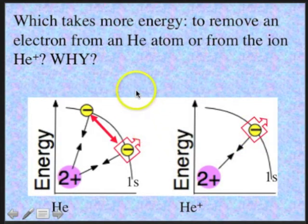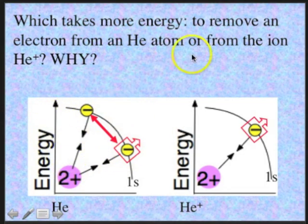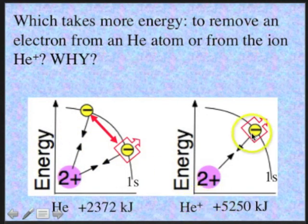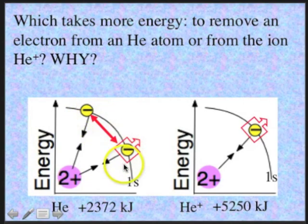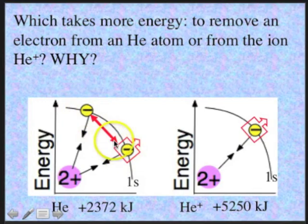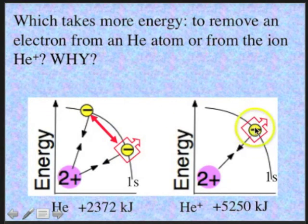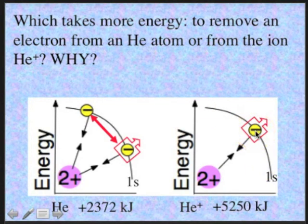Which takes more energy to remove an electron from a helium atom or from the He+ ion? It takes much more energy from He+. The two electrons in the helium atom share the same 1s orbital and repel each other, making it a little easier to pull one off. In He+, the single electron occupies the 1s orbital alone with no repulsion energy, so it's harder to remove.